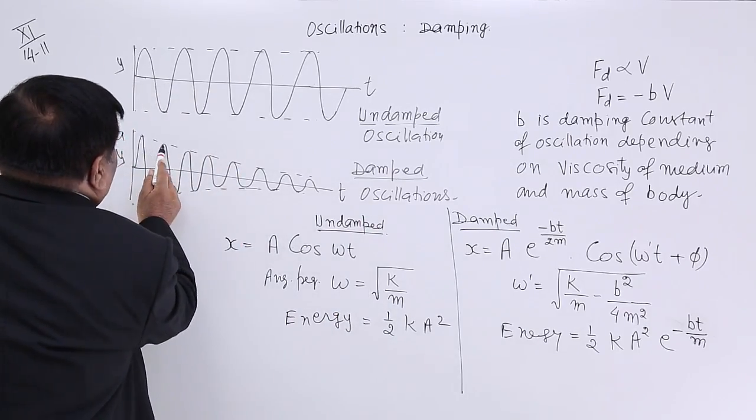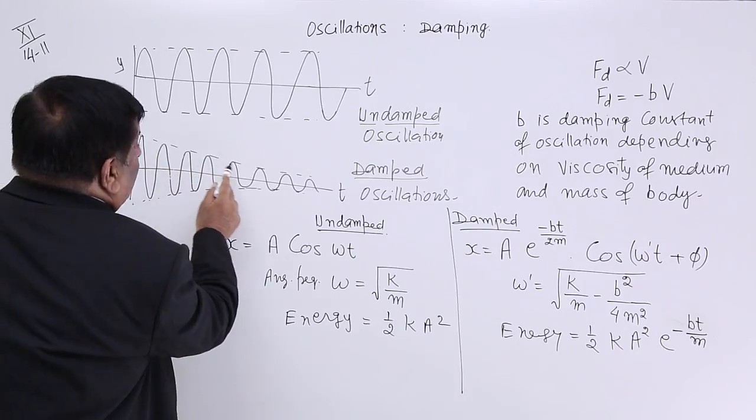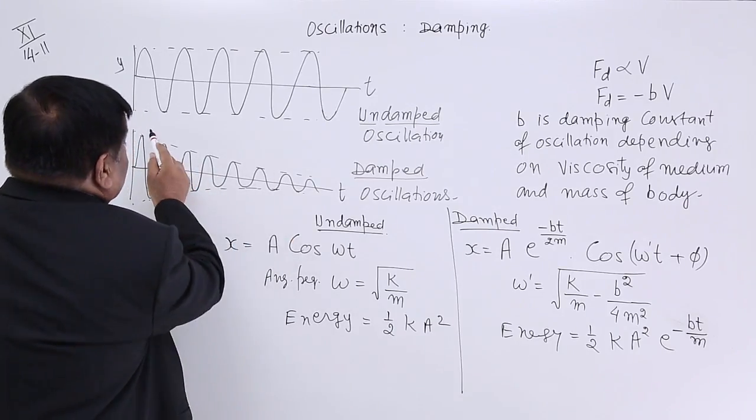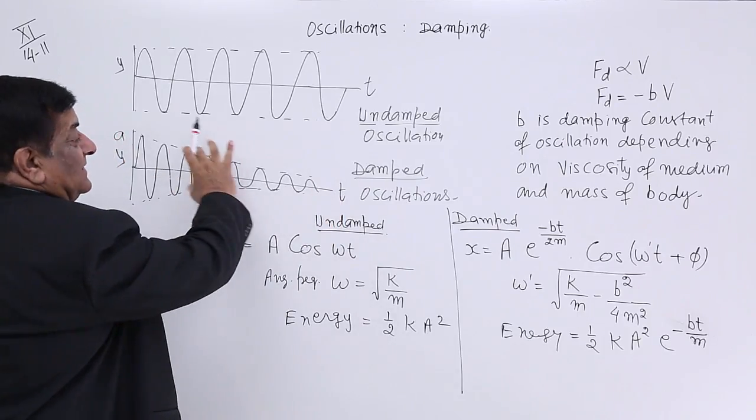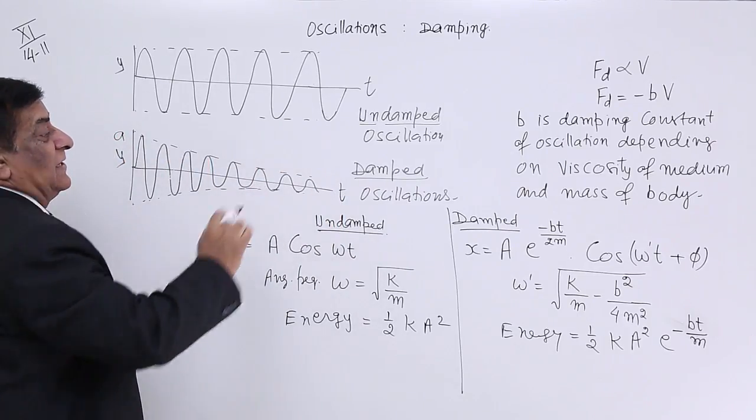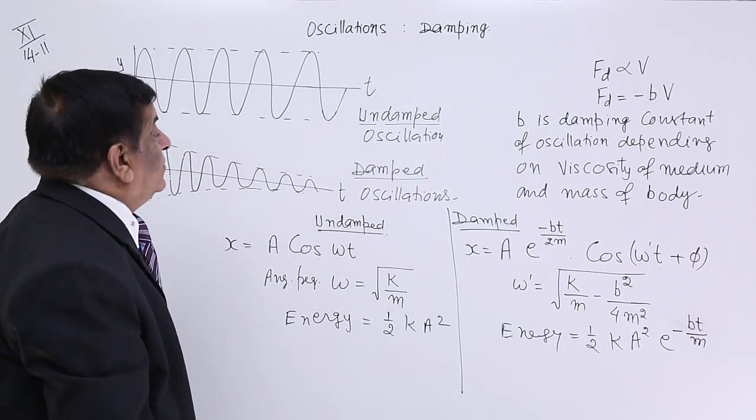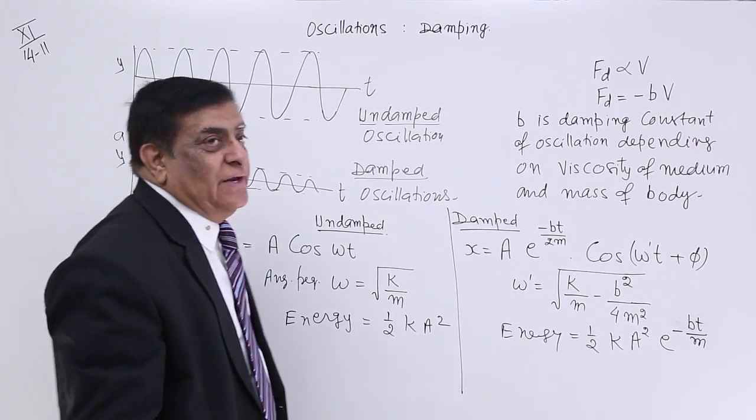So, these are damped oscillations. If you see this peak, peak, peak, peak, peak, and we may connect them, this is a parabolic decrease, parabolic, not a straight line. These are damped oscillations.